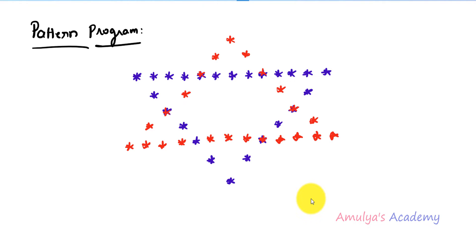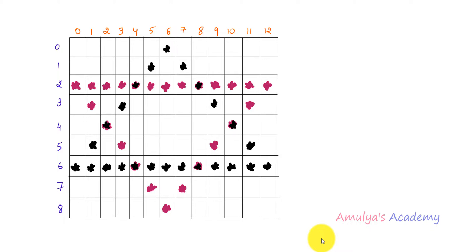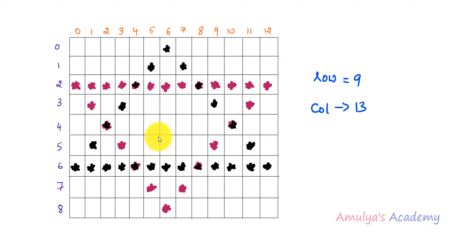To write the program, I will take this pattern as the example. We can write this pattern with row number and column number. We can see this pattern contains 9 rows starting from 0 and 13 columns. So we need to write the program for this pattern which contains 9 rows and 13 columns, and we want to print stars in different rows and columns.